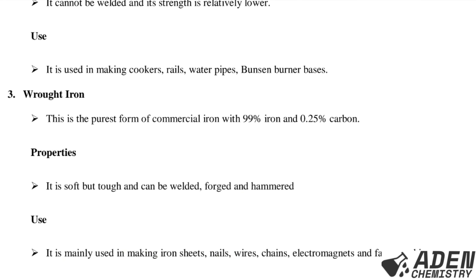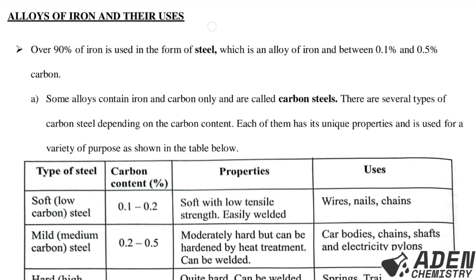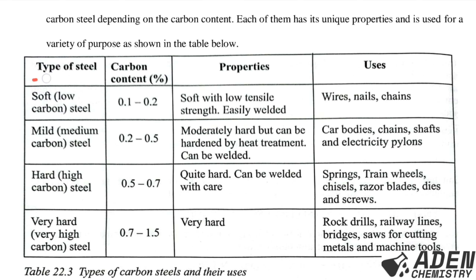Alloys of iron and their uses: over 90% of iron is used in the form of steel, which is an alloy of iron with between 0.1% and 0.5% carbon. Some alloys contain iron and carbon only and are called carbon steels. There are several types of carbon steels depending on carbon content, each with unique properties used for a variety of purposes as shown in the table.